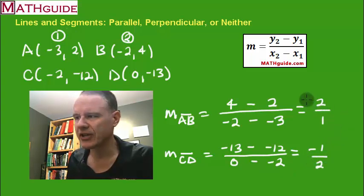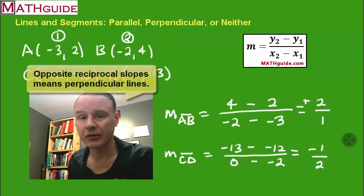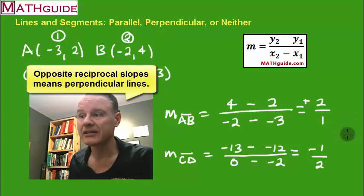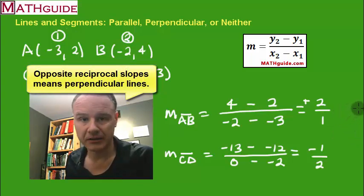Now you'll look at these slopes. Notice how one is plus and the other one's negative. So they're opposite in sign. And let's see, 2 over 1 and 1 over 2. Yep, they're reciprocals of each other. So they're both opposite and reciprocal. So it means that these two are perpendicular.